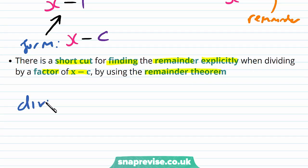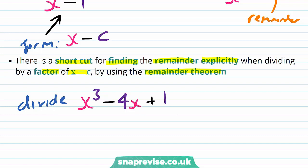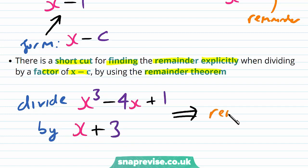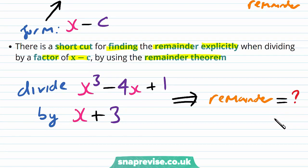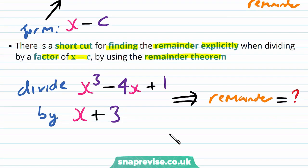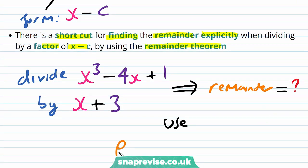Let's say we're dividing x³ - 4x + 1 by x + 3. If we want to calculate the remainder when performing this division, then we use the remainder theorem.